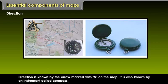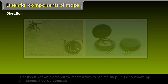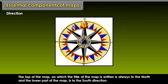Direction: Direction is known by the arrow marked with N on the map. The top of the map on which the title of the map is written is always to the north and the lower part of the map is to the south direction.